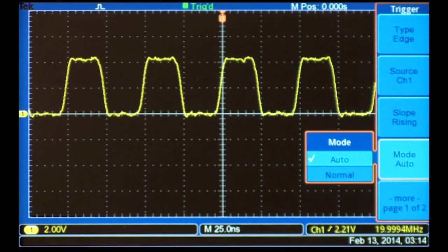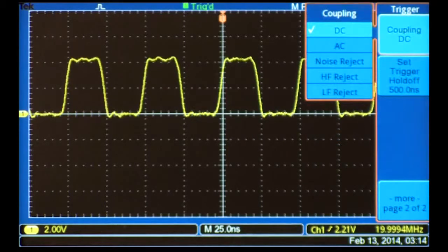Normal mode only updates when the trigger conditions have been met. Trigger coupling lets you apply filters and hysteresis to the trigger signal. For digital signals with well-defined edges, you probably won't have to worry about this.